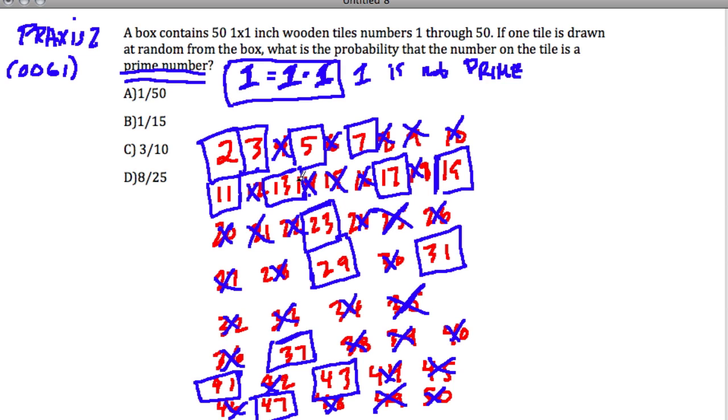One, two, three, four, five, six, seven, eight, nine, ten, wait. Four, eight, ten, twelve, fourteen, fifteen. There are fifteen prime numbers out of fifty. If we reduce that, you can divide both numerator and denominator by five, and we get three out of ten, which is our answer.